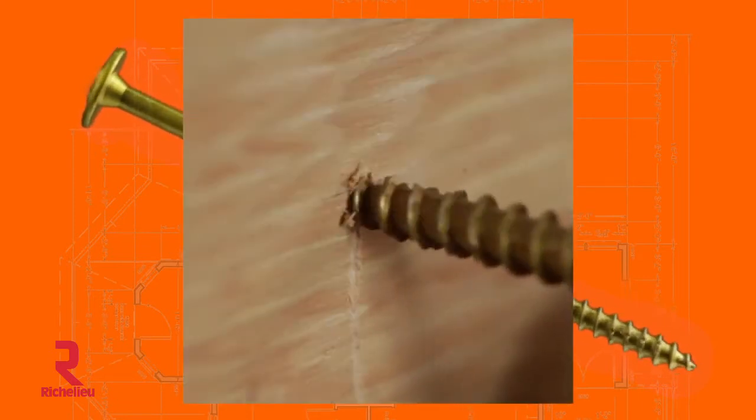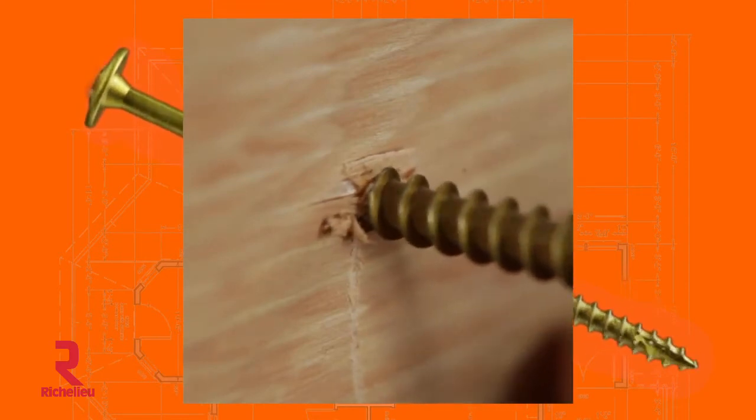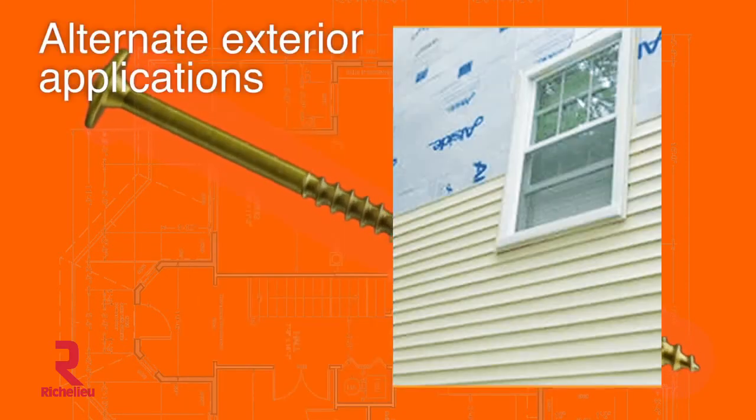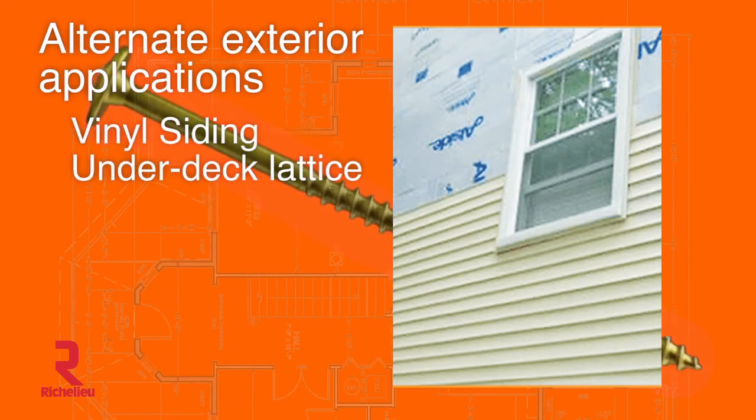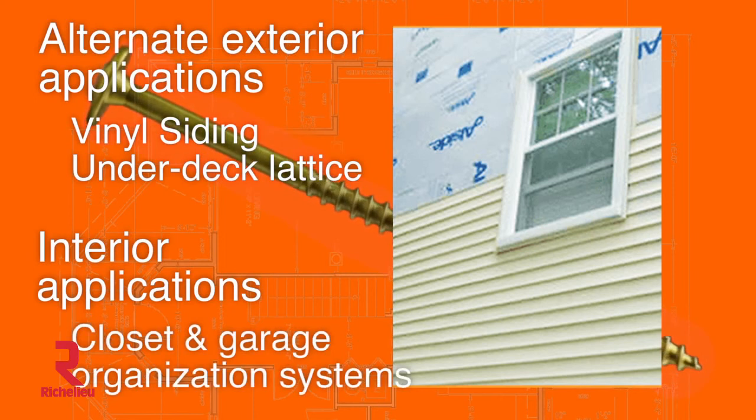And lastly, the self-tapping zip tip allows the screw to be installed without the need for pre-drilling. Alternate exterior applications include vinyl siding and under-deck lattice work. On interior applications, closet and garage organization systems mount easily with these screws.